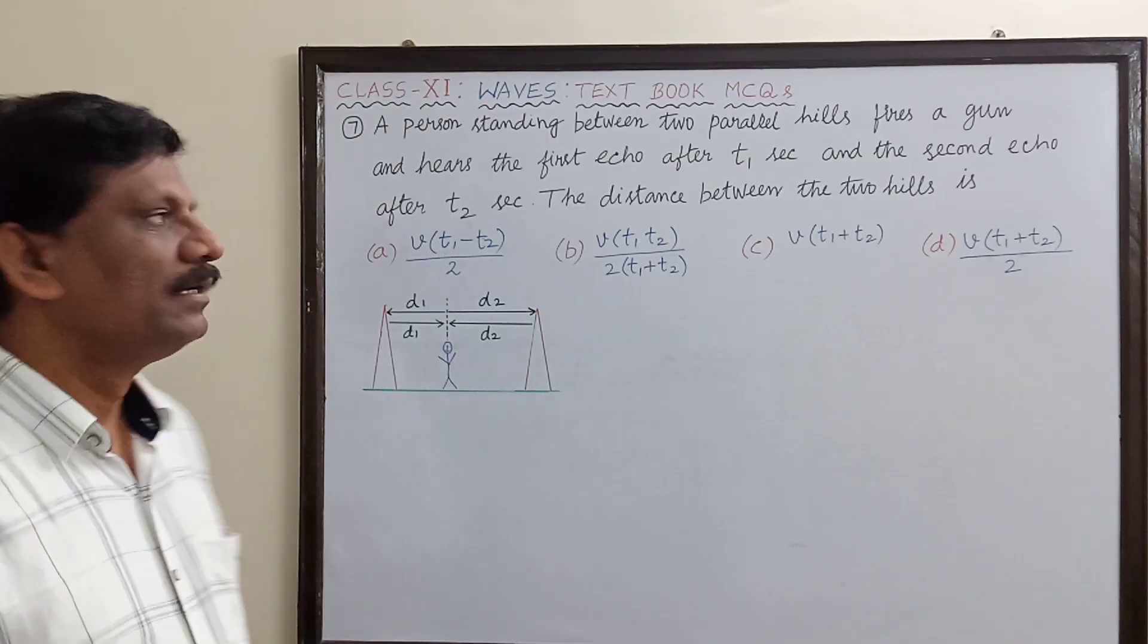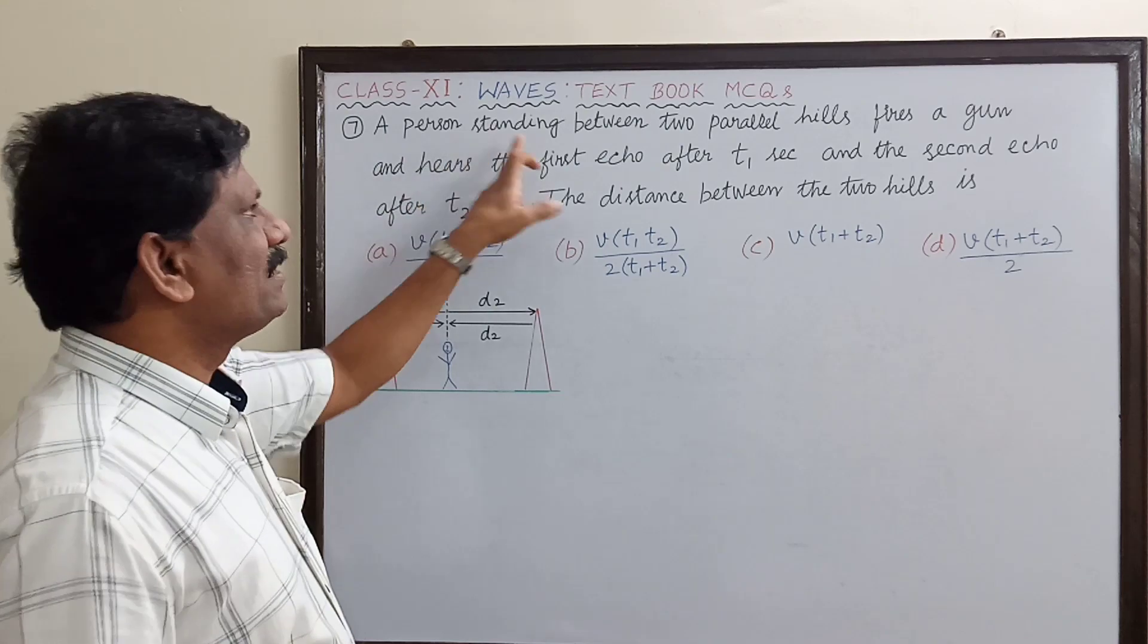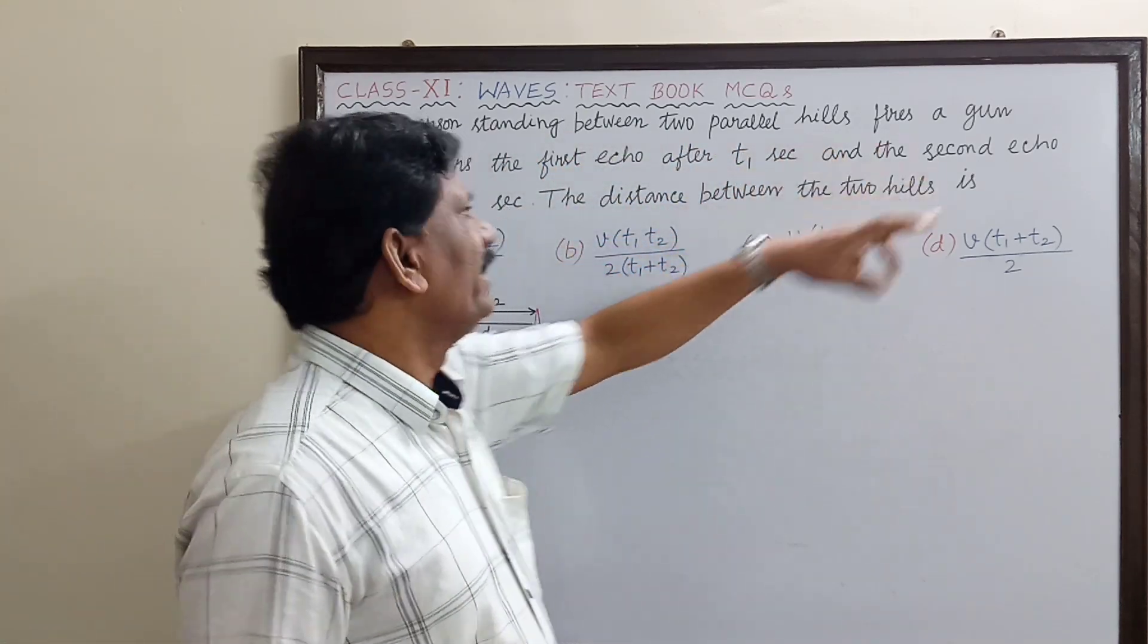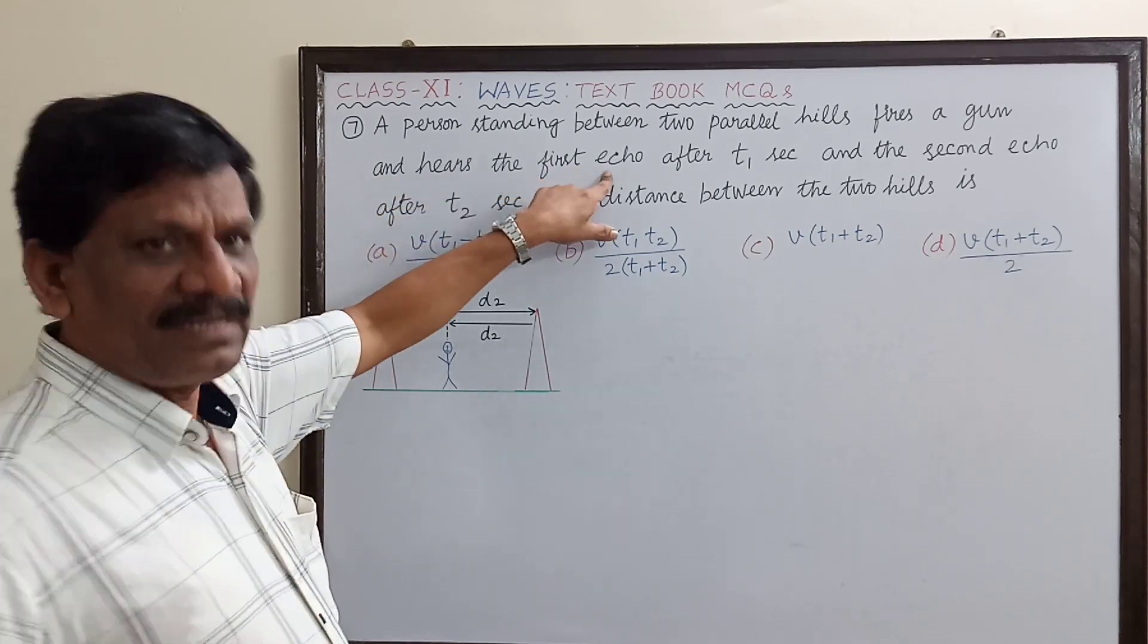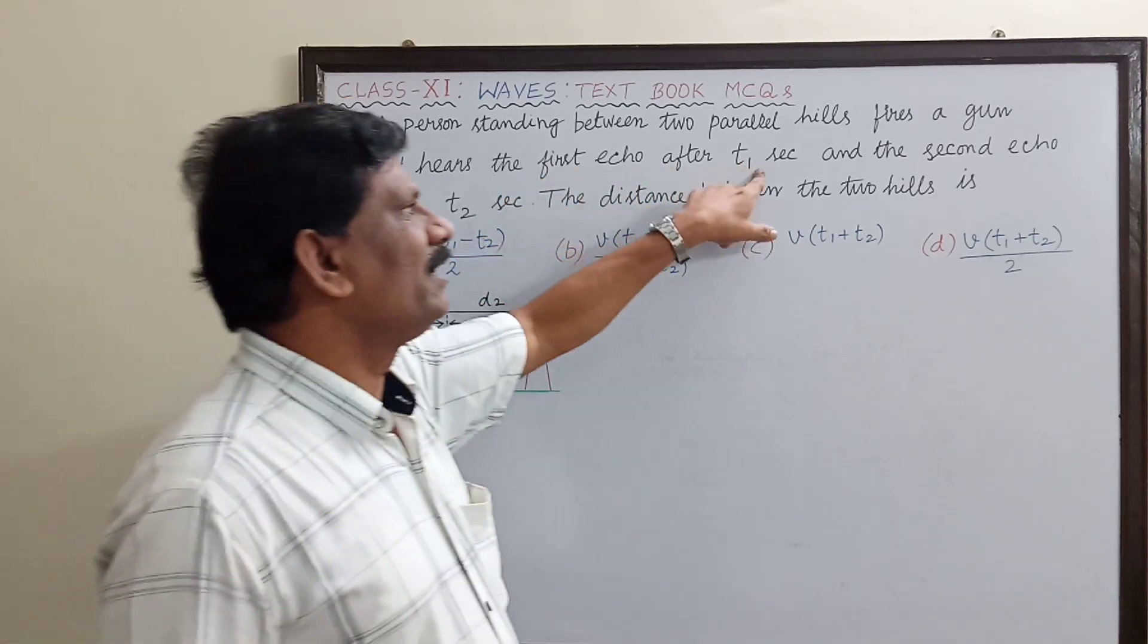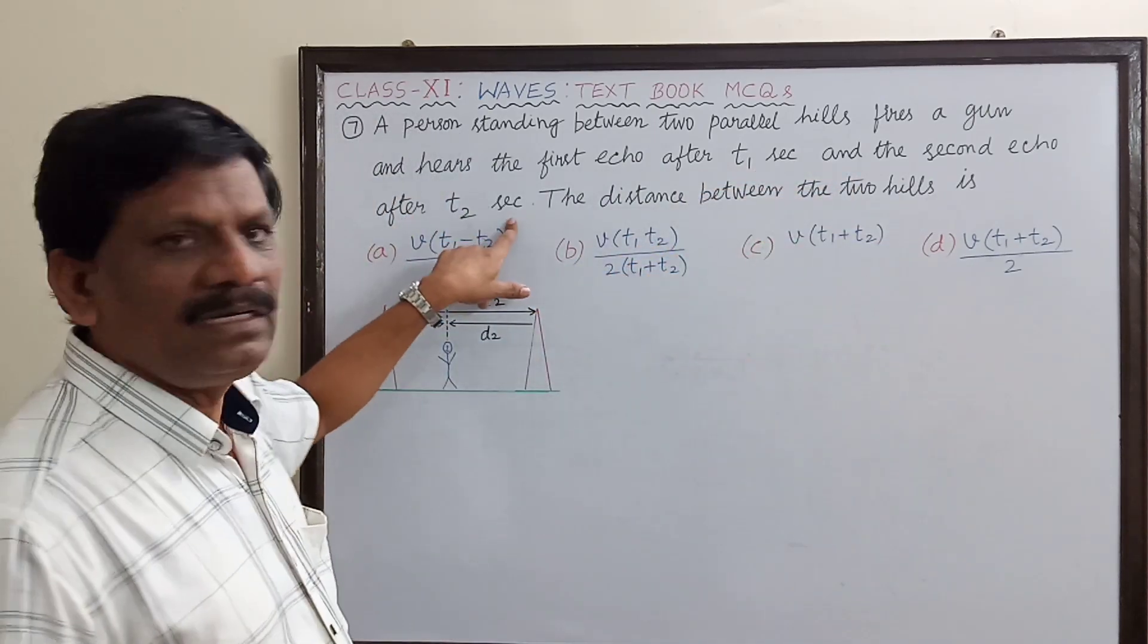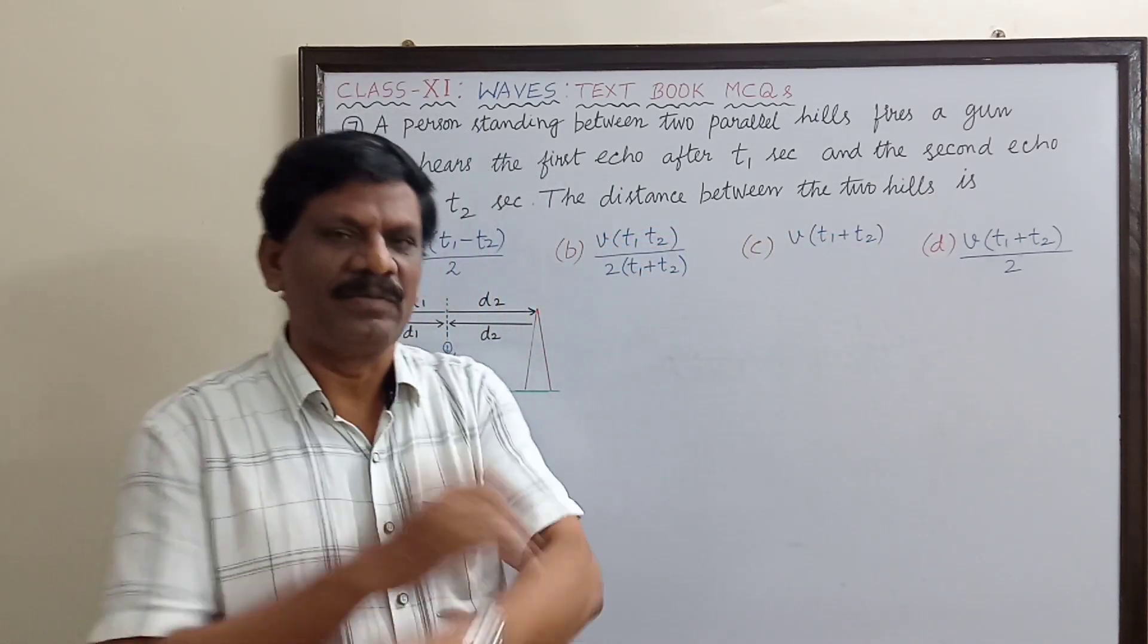Hi students, MCQ number seven. A person standing between two parallel hills fires a gun and hears the first echo after t1 seconds and the second echo after t2 seconds. The distance between the two hills is to be determined.